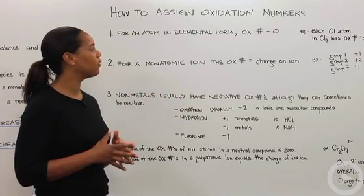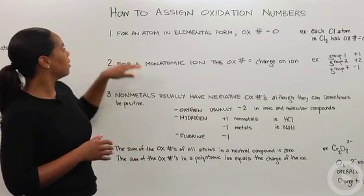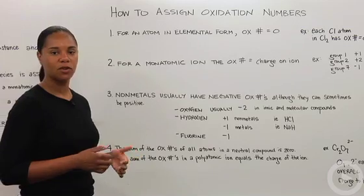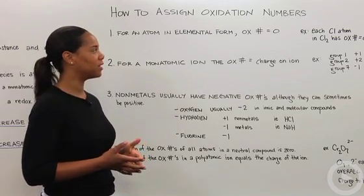Just kind of be open to learning how to do it. The first one is for an atom that's in its elemental form—basically the way you find it on the periodic table—it's going to have an oxidation number of zero.